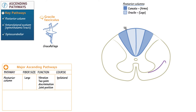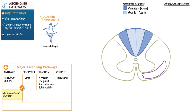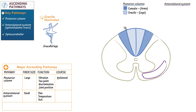Now show that the anterolateral system — the spinal thalamic tract — lies just outside of the anterior gray matter horn, in the anterolateral region of the white matter of the spinal cord. The anterolateral system comprises small fiber sensation pathways that carry pain, temperature, and itch sensory information — essentially what's bothersome or painful.